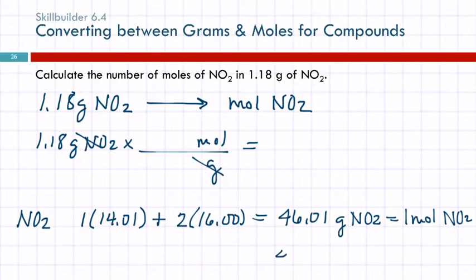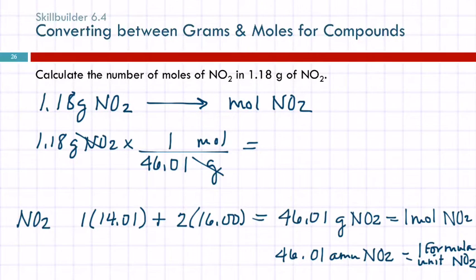Now, it's also true that 46.01 atomic mass units of NO2 equals one formula unit of NO2. But that's not going to be helpful to us in this problem. So we got this number here. That's the number of grams. So that goes here with the unit gram. And one mole.